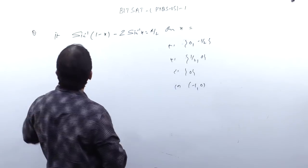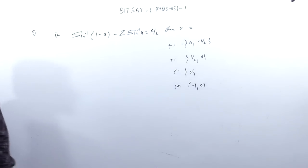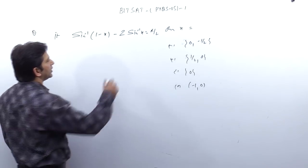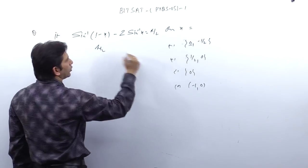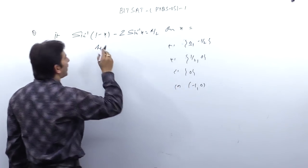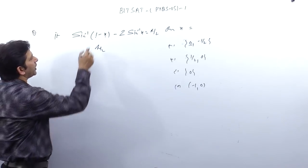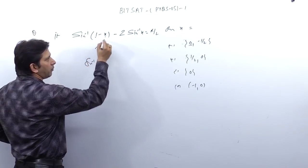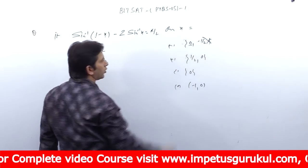Next question: sin⁻¹(1 - x) minus 2 sin⁻¹(x) equals π by 2, find x. You can solve it with options. If I put x = 0, I get sin⁻¹(1) = π/2, and the other term is 0, so x = 0 satisfies it. Now if I try x = minus 1 by 2, I get sin⁻¹(1 minus 3 by 2) = sin⁻¹(−1/2 + something) which is not defined. So x = minus 1 by 2 is rejected.